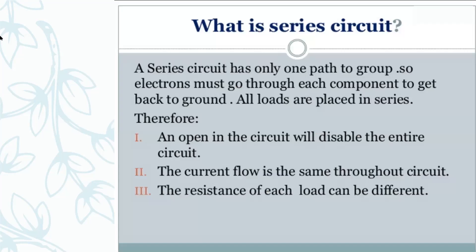This is a series circuit because the lamps are connected and the current flows inside this wire and has only one path. If you have an open circuit, the current cannot pass through it. The current flow is the same throughout the circuit, but the resistance can be different.